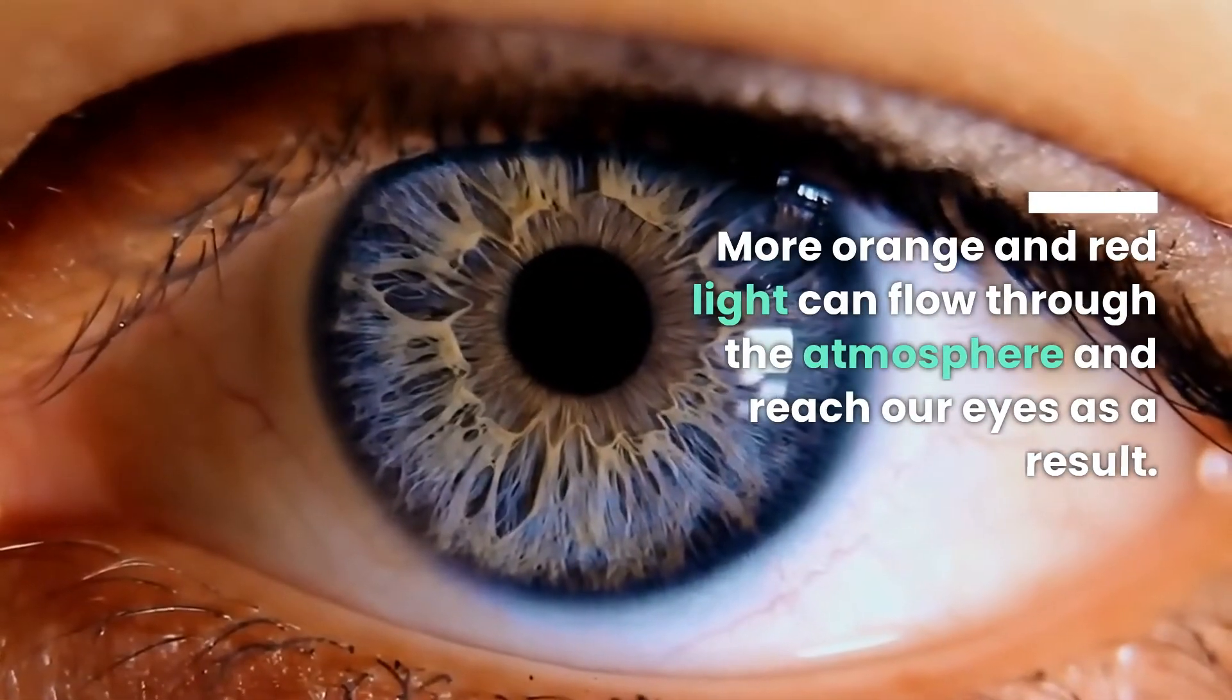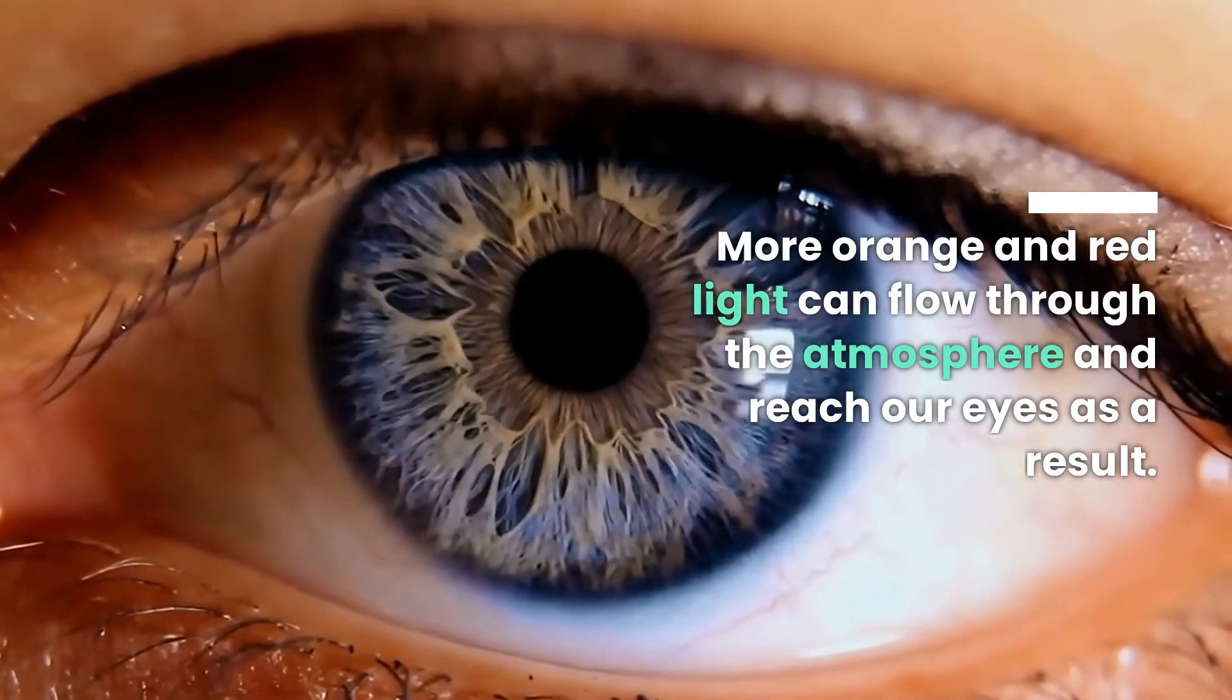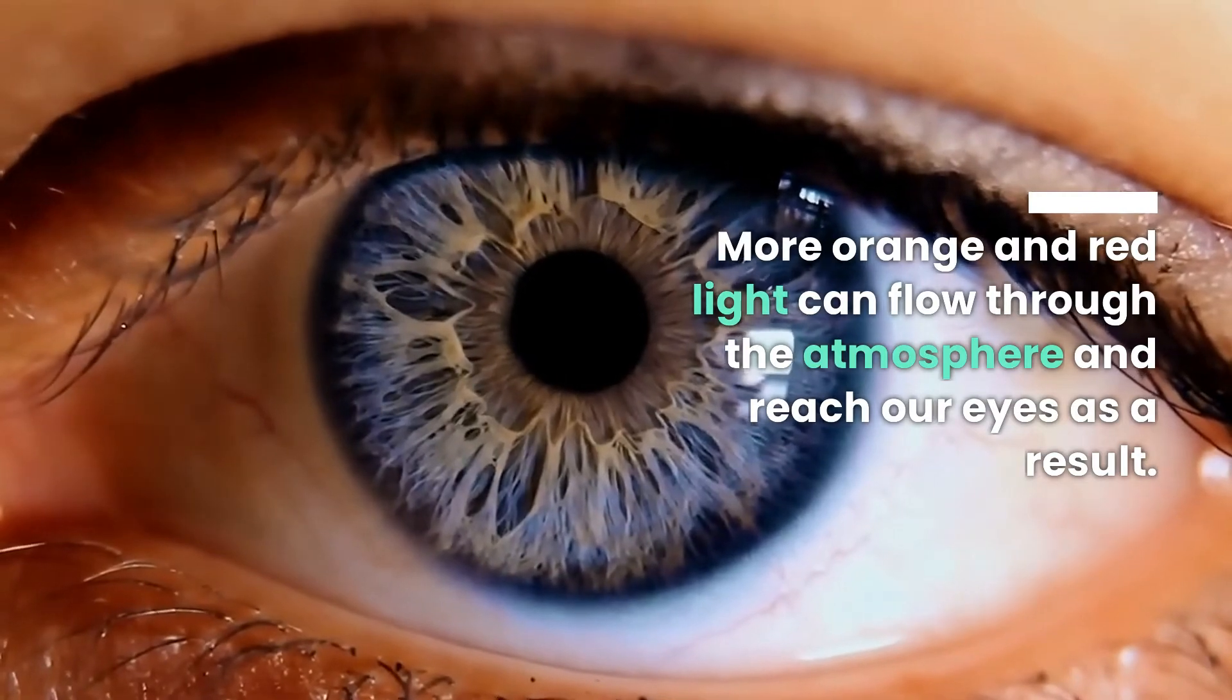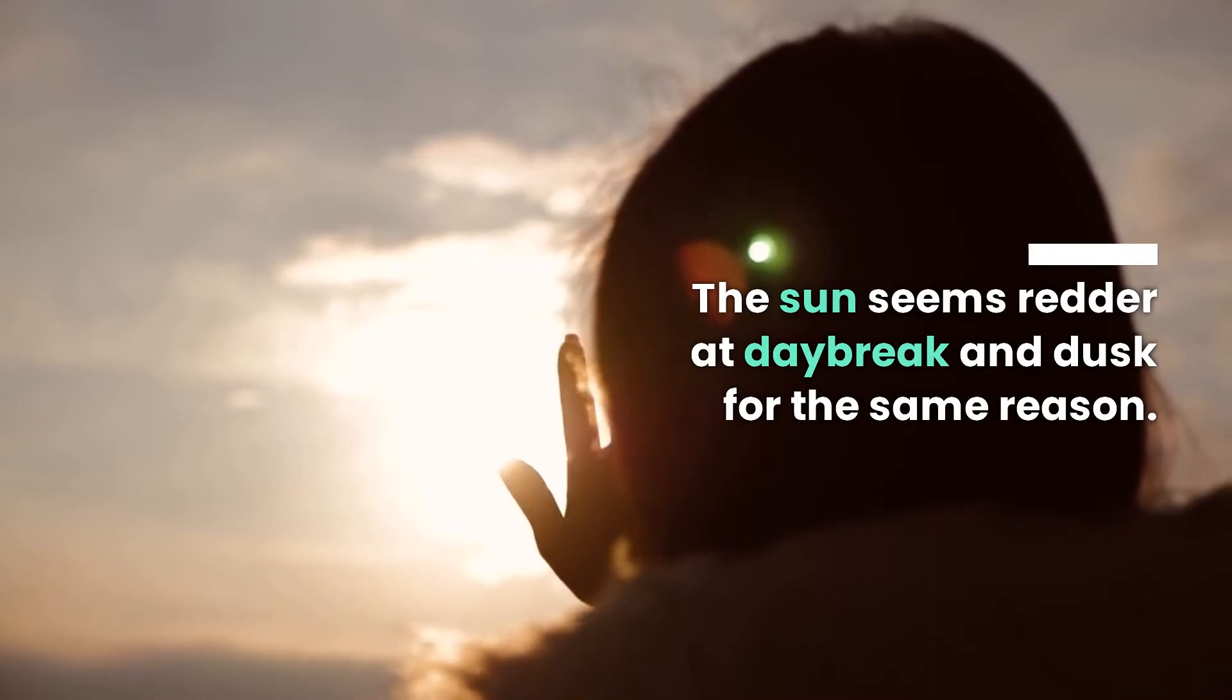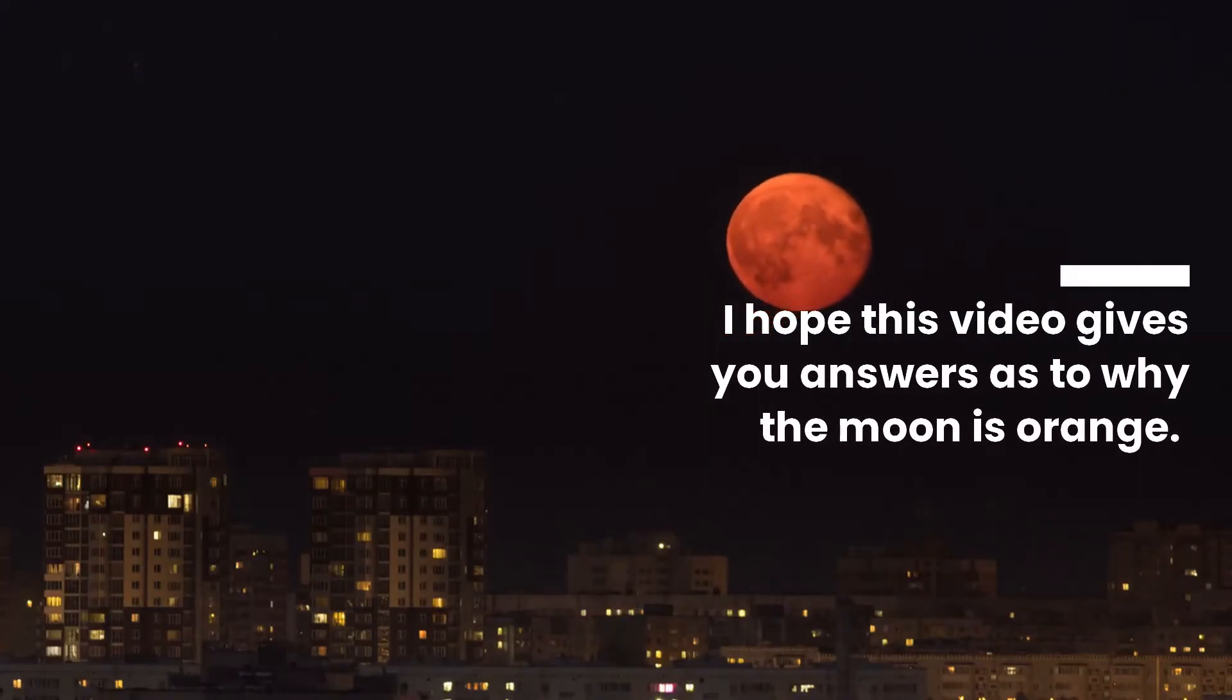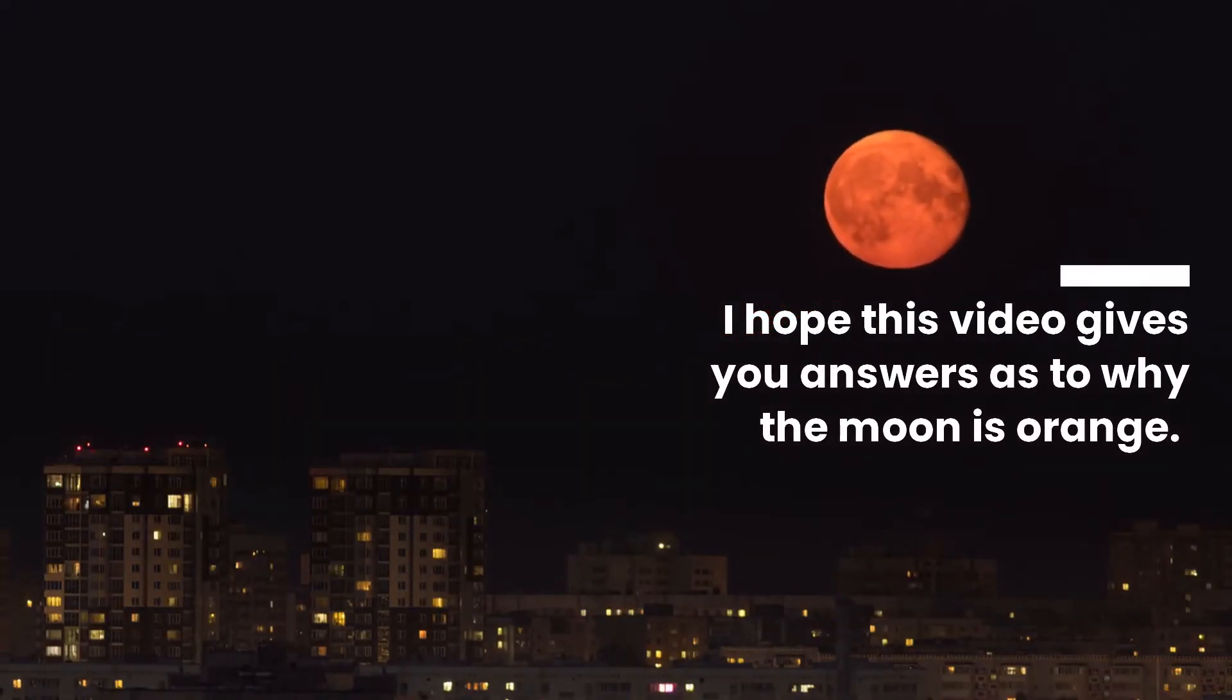More orange and red light can flow through the atmosphere and reach our eyes as a result. The sun seems redder at daybreak and dusk for the same reason. I hope this video gives you answers as to why the Moon is orange.